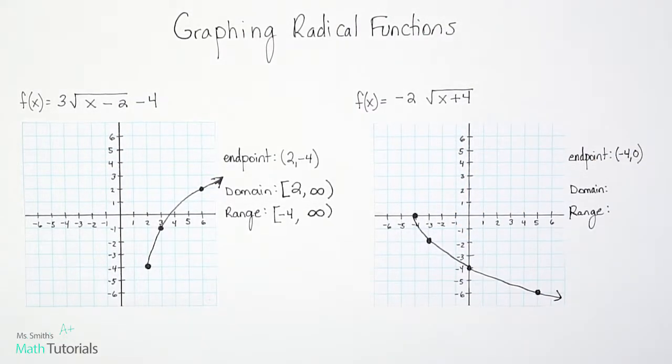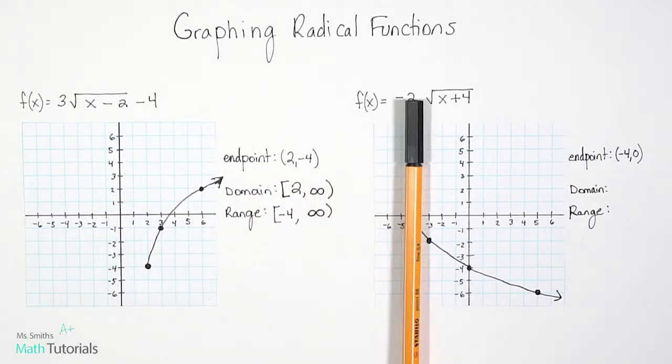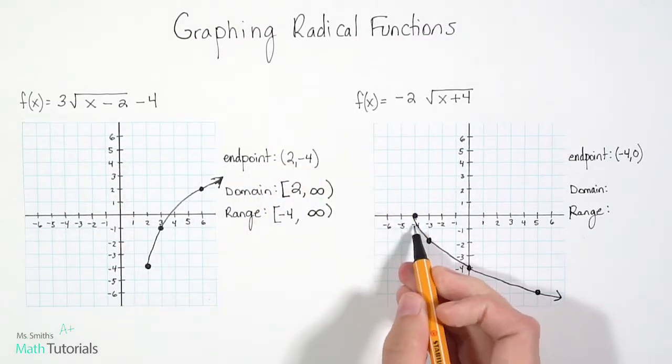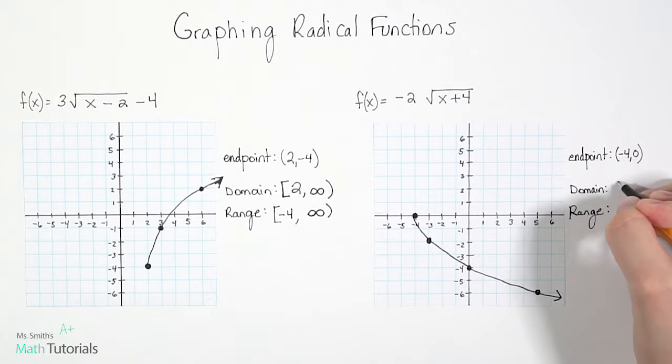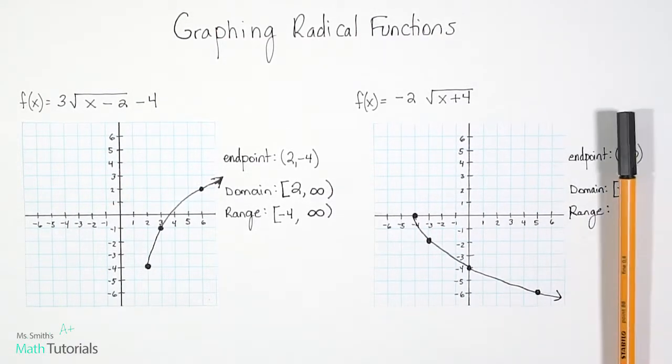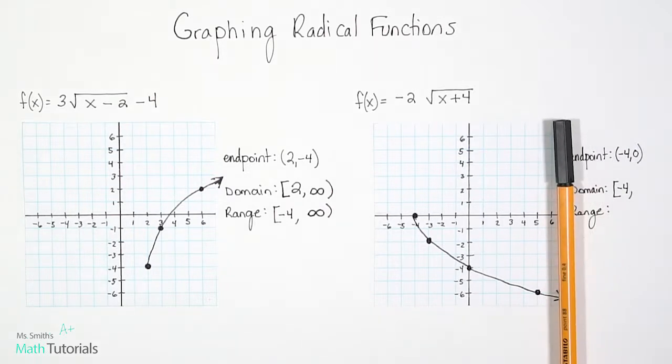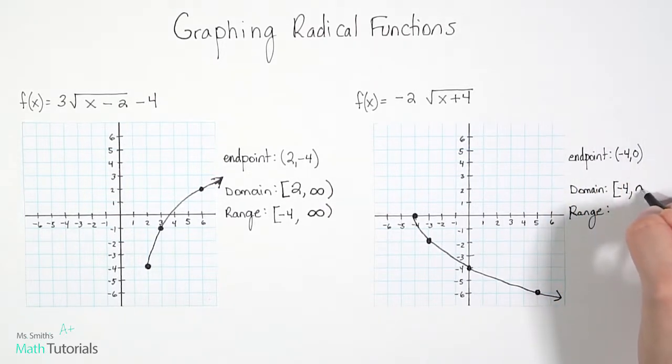And to do our domain, we're going to read left to right. So when I come in from the left, the first place I hit is a negative 4. It's a solid point, so it gets a bracket. And when I come in from the right, what I hit is an arrow. So an arrow means positive infinity.